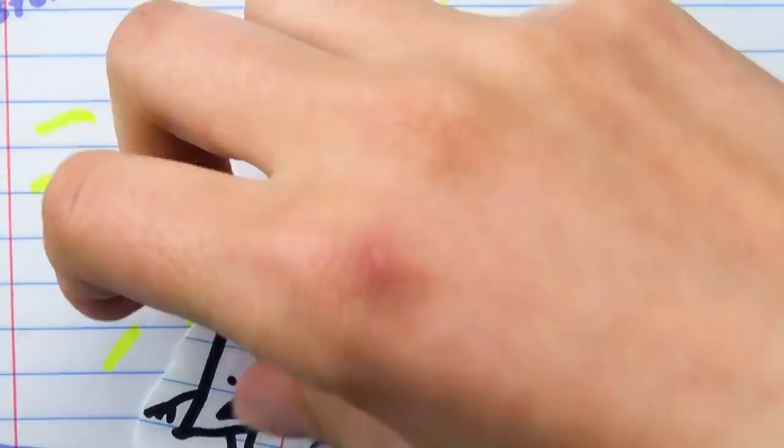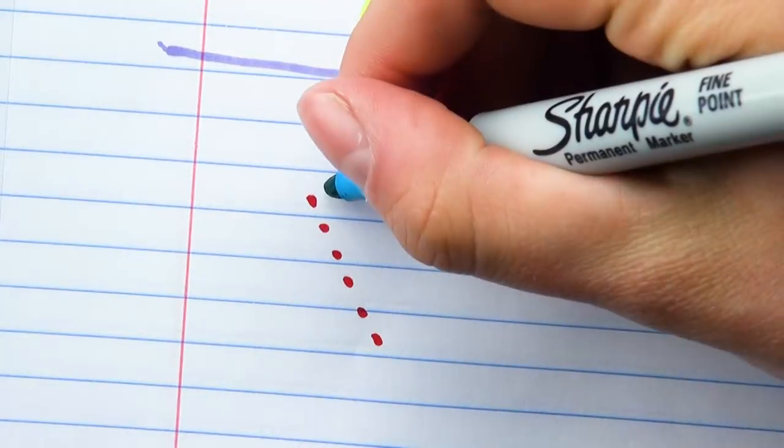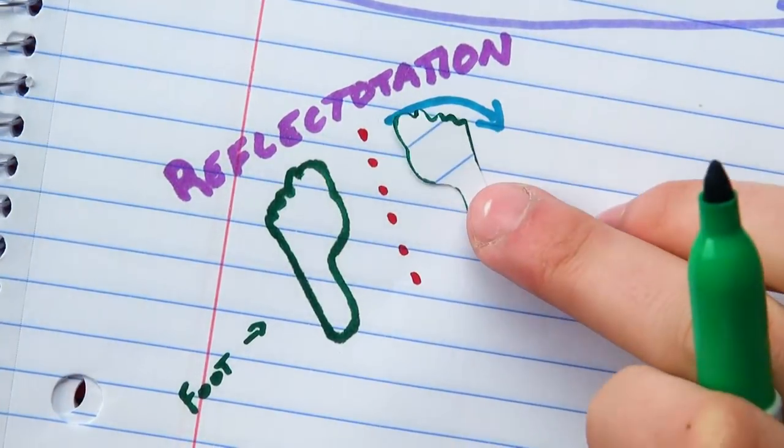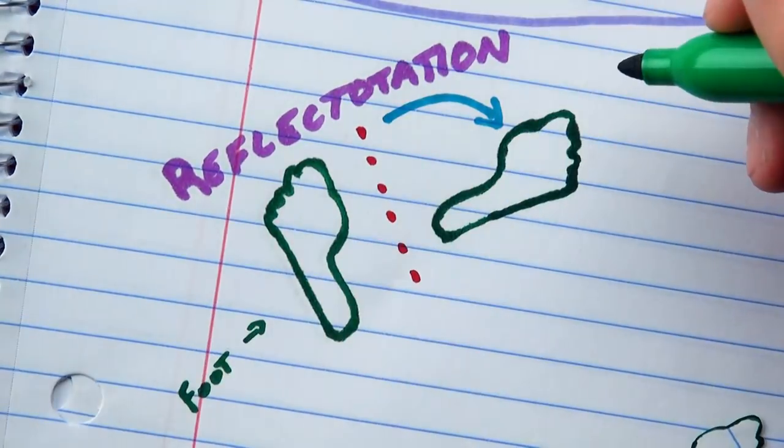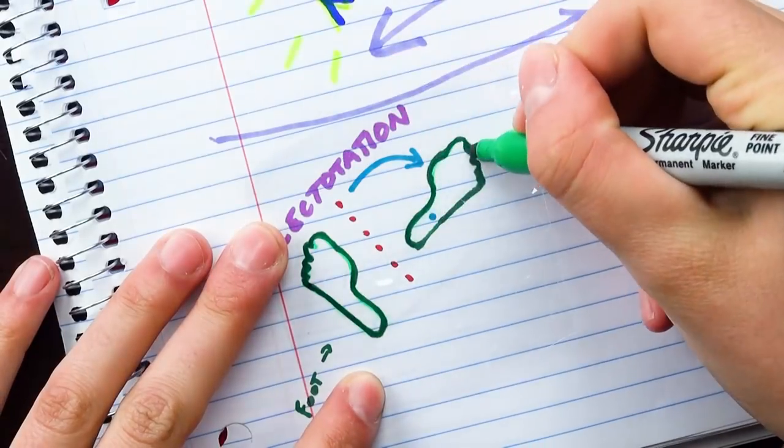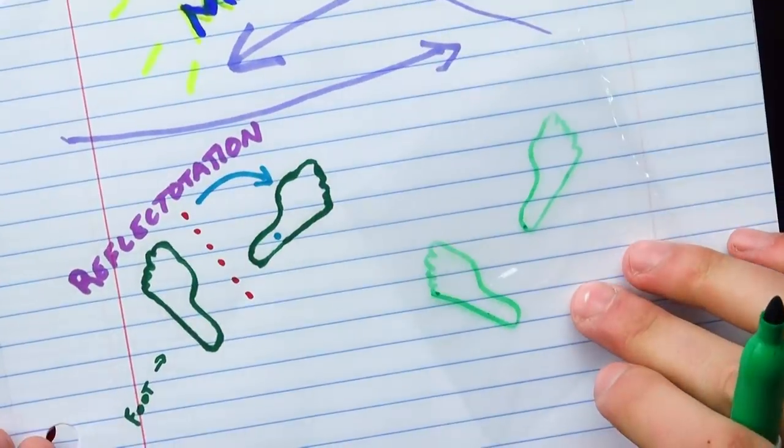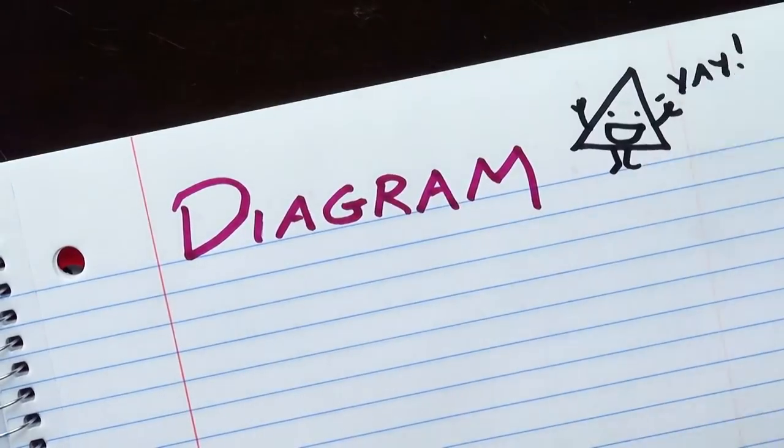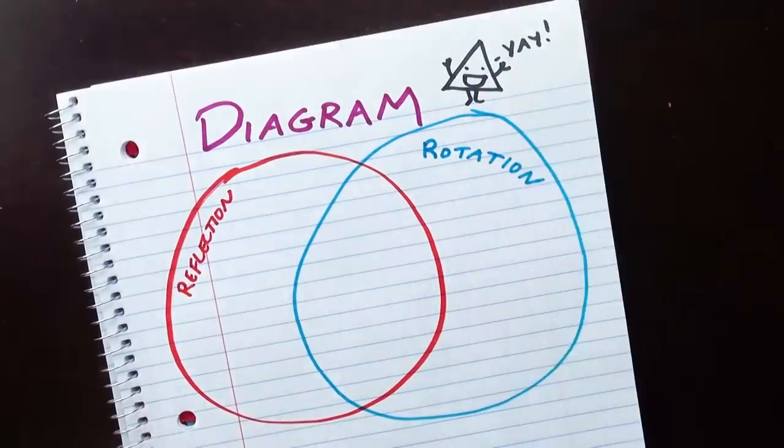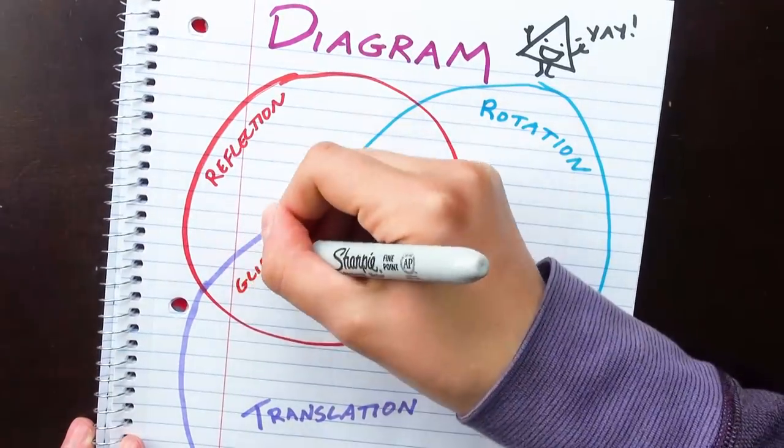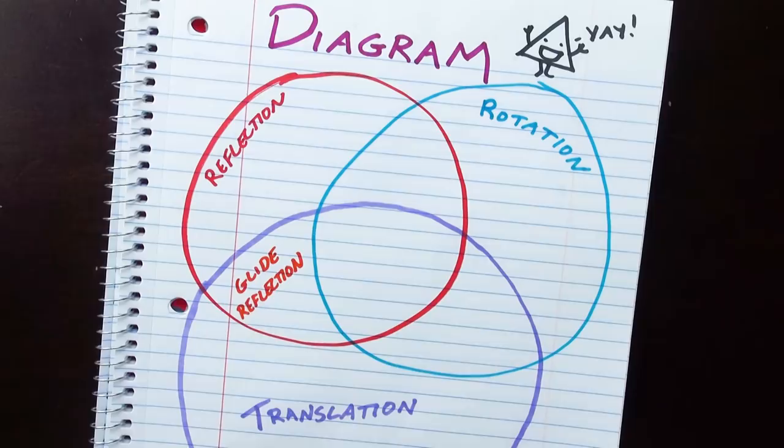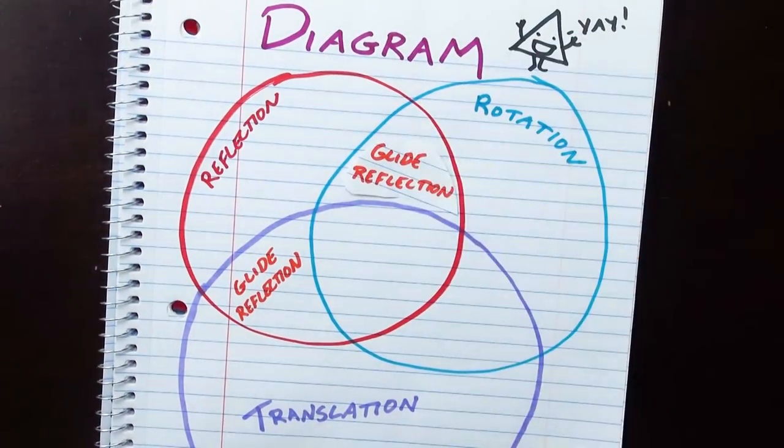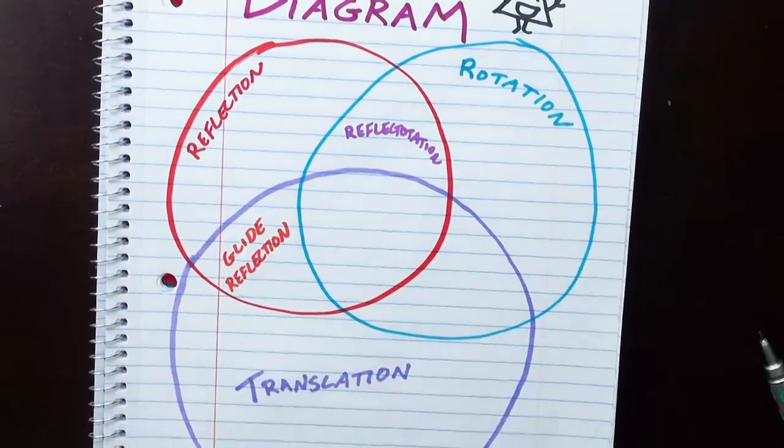And then you wonder, why do you never hear about other combinations? So you try putting a reflection and a rotation together, which you name a reflectotation. And the reflectotation is definitely different from either a reflection or a rotation alone, although you notice the reflectotation looks an awful lot like a glide reflection, which is interesting because you can make a diagram. See, there's reflections and rotations and translations, and we can make sure we get all combinations, like a glide reflection is a reflection translation, and between reflection and rotation is our reflectotation, which is a glide reflection. Or maybe a glide reflection is a reflectotation? Anyway, they're the same.